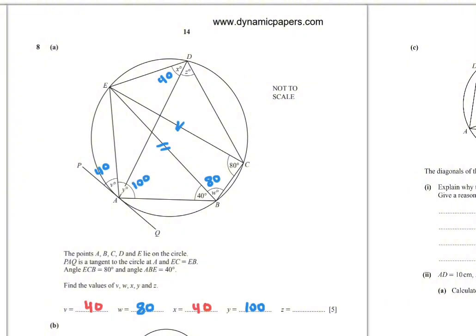To find Z. EBCD is also a cyclic quad. The opposite angles add up to 180. W equals 80, so this angle is 180 minus 80, which is 100. Now we have X equals 40, so 100 minus 40 equals 60. So Z equals 60.